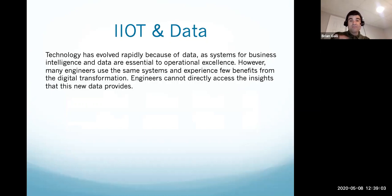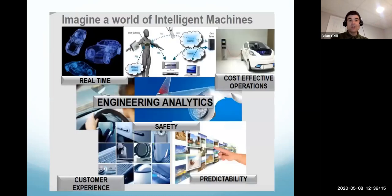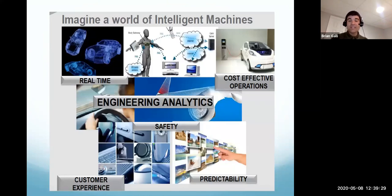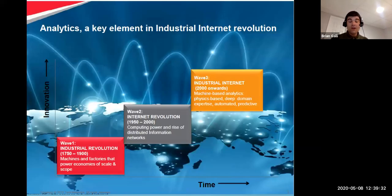It's evolved so rapidly that engineers can't use the same systems and experience in this digital transformation. We need direct access to data so we can make real-time changes. Think about the world of intelligent machines — safety, customer experience, real-time decision-making, predicting the future, cost-effective operations — all tied together by analytics and how it has changed from the Industrial Revolution till now.